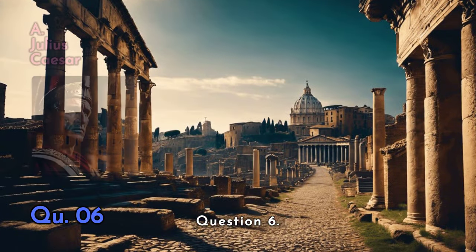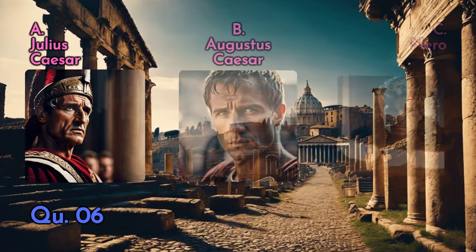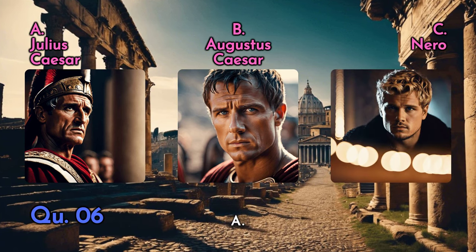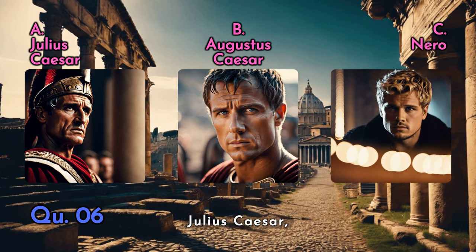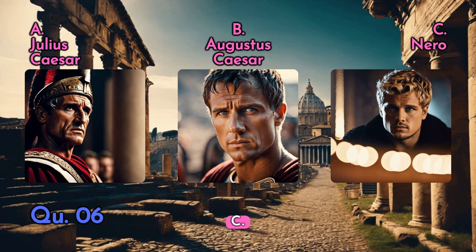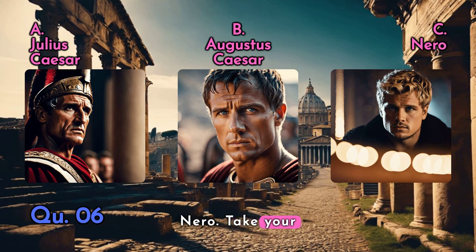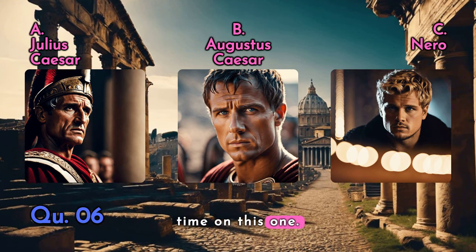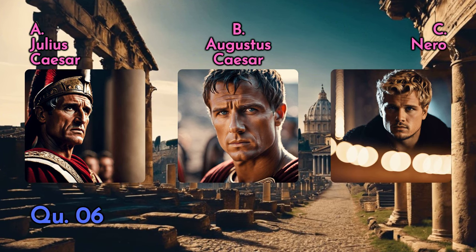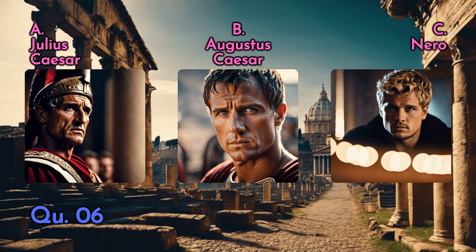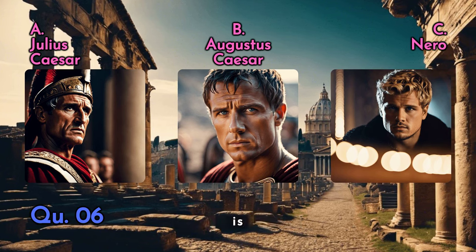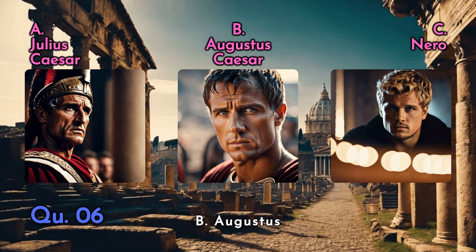Question six: who was the first Emperor of Rome? A — Julius Caesar, B — Augustus Caesar, C — Nero. Take your time on this one. And the answer is B — Augustus Caesar.